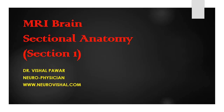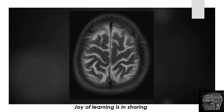In this video, I am going to discuss MRI brain with respect to sectional anatomy. The dura mater which forms the partition between the two cerebrae is called the falx cerebri. The red line indicates the respective central sulci on both sides.